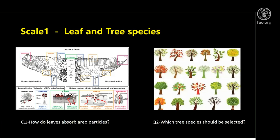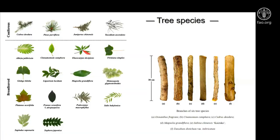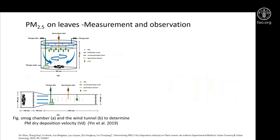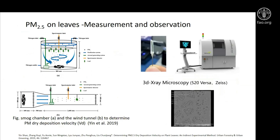Let's start with the first scale — what happens in trees and leaves. There are two questions we would like to answer: how do leaves absorb aeroparticles, and which tree species should be selected? In our study, we chose 14 typical tree species in Shanghai with four conifers and ten broad-leaved trees. Leaves and branches were both sampled. We used a wind tunnel method and a smoke chamber method to determine the PM2.5 dry deposition velocity on leaves and branches. A 3D X-ray microscope was used to observe where the particulate matter is located on the surface and inside the leaves.